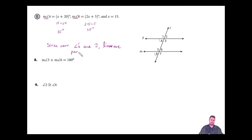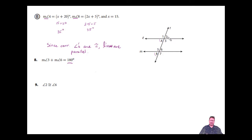That is the converse of the corresponding angles theorem. For angle three and angle six: if they add up to 180, we write — since same side interior angles are supplementary, the lines must be parallel. Finally, angle two and angle six are corresponding angles, the same relationship as in part B. If angle two is congruent to angle six, since corresponding angles are congruent, the lines must be parallel.